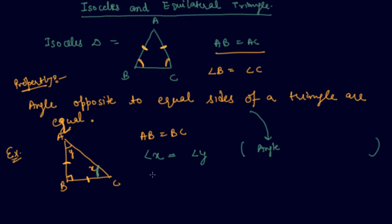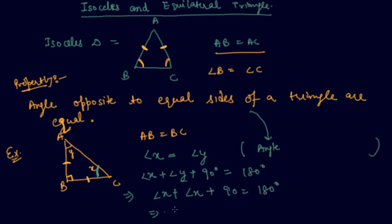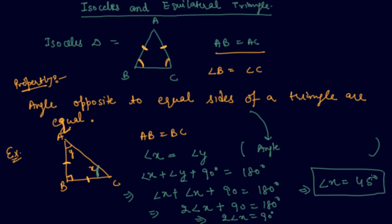As I told you previously, the sum of all angles of a triangle equals 180°. So angle X plus angle Y plus angle B equals 180°. Since angle B is 90°, this becomes 2 times angle X plus 90° equals 180°. Therefore, 2 times angle X equals 90°, giving us angle X equals 45°. So both angle X and angle Y are 45°.